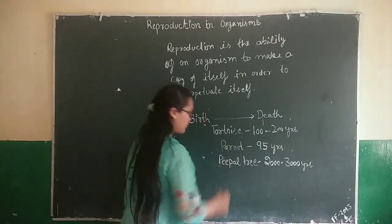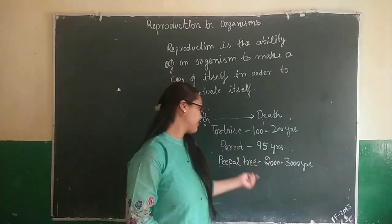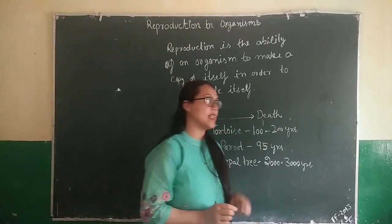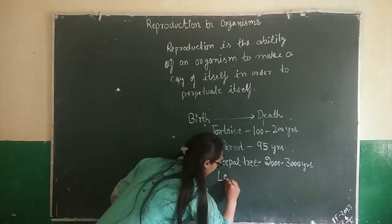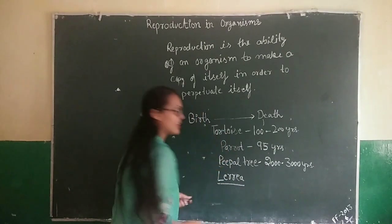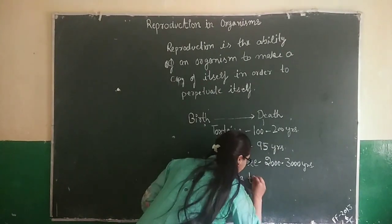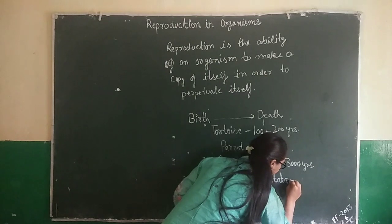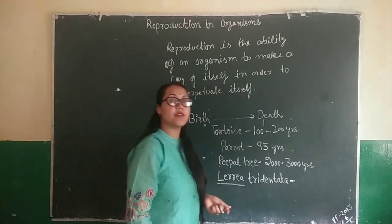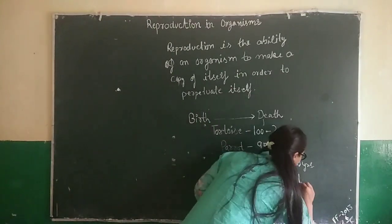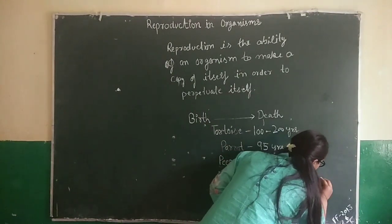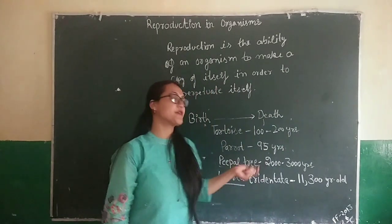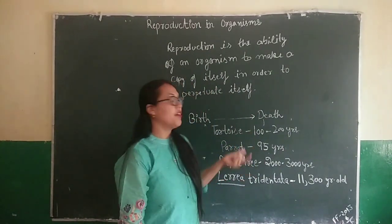One interesting piece of information: there is a living plant — the oldest living plant — present in California, USA. Its name is Larrea tridentata, and it is 11,300 years old. So you must be very clear that life spans vary greatly among various organisms.